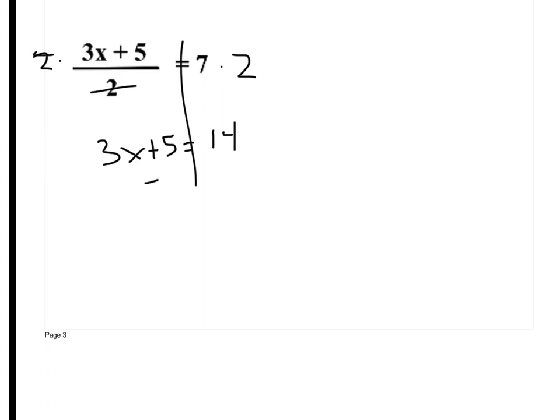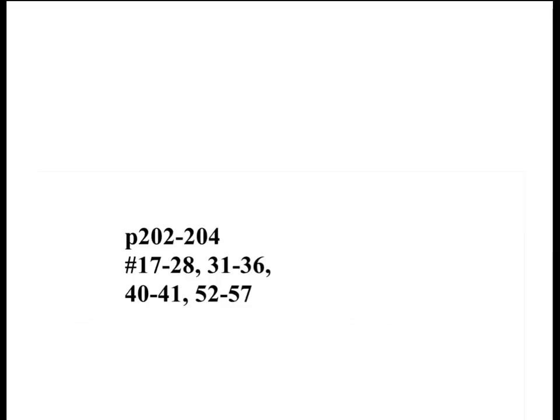We would subtract 5 first because if I look at order of operations, I added, or I times by 3 and then I added 5. So I go in reverse order. So I subtract 5 to both sides. 14 minus 5 is 9. 3x equals 9. So I divide by 3. x must equal 3. Here's your homework.